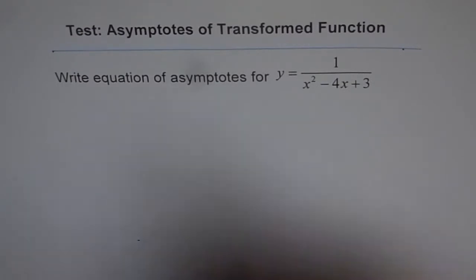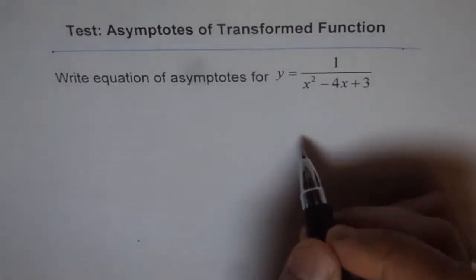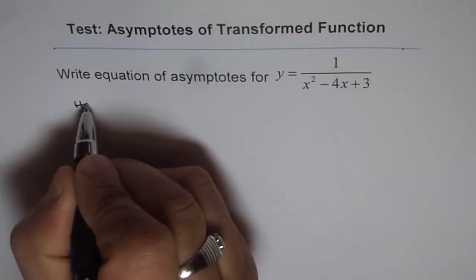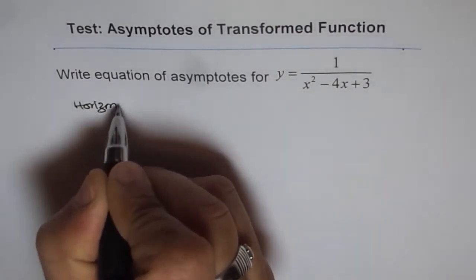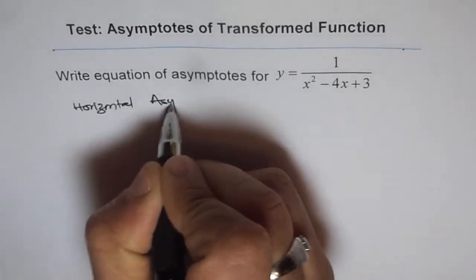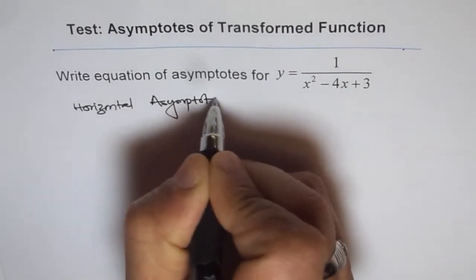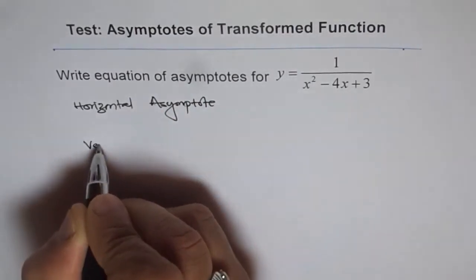A rational function like this has two kinds of asymptotes. One is a horizontal asymptote, and the other is a vertical asymptote.